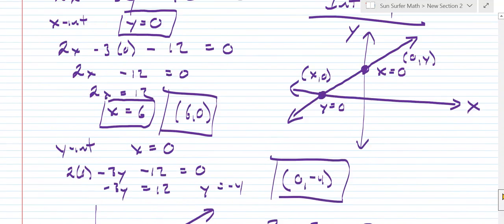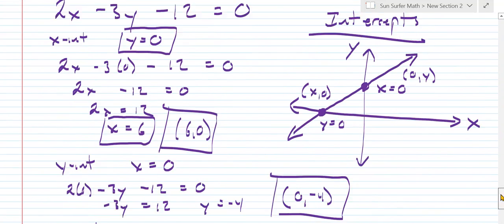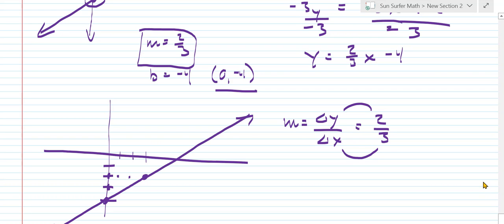So that's two different methods. Finding the intercepts or putting it in slope intercept form, starting with the y intercept and then finding the slope. So the last way that I'm going to show you